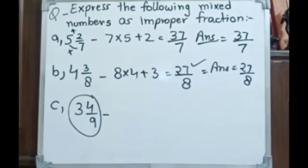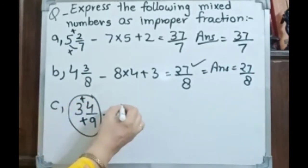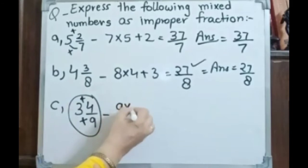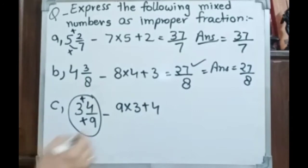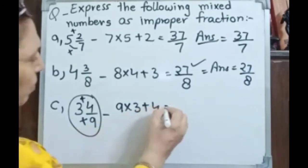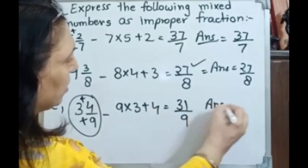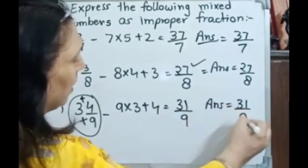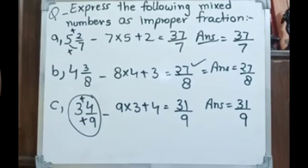For 3 whole number 4 by 9, this is a mixed fraction. Multiply 9 by 3 plus 4 — 9 threes are 27, plus 4 gives 31 by 9. The answer is 31 by 9. Improper fraction means numerator is greater than denominator.